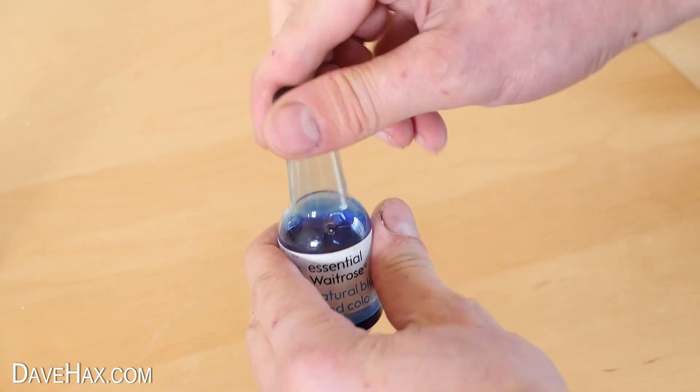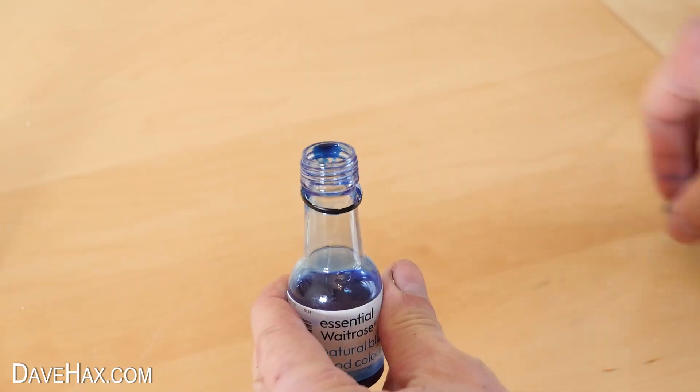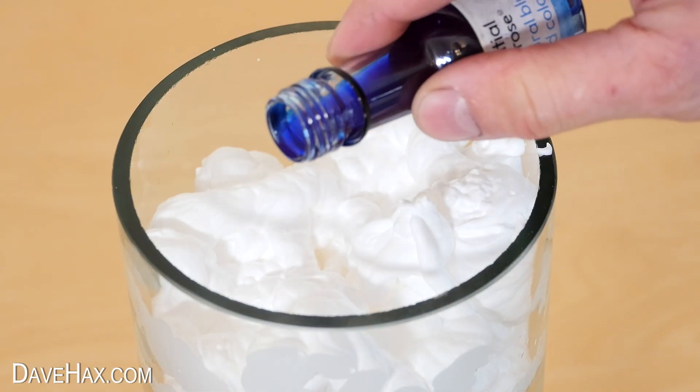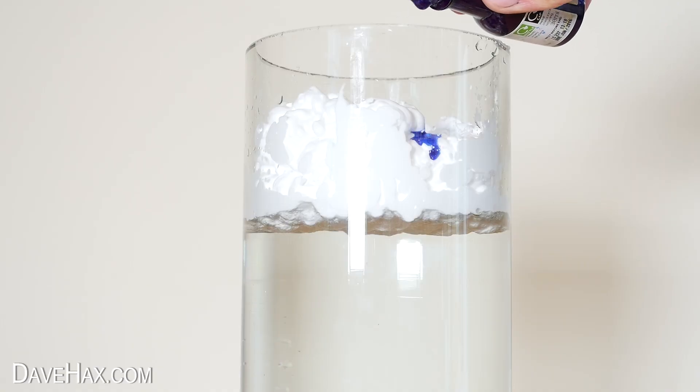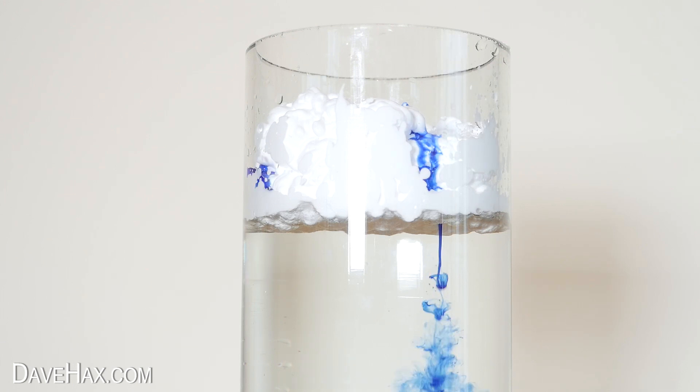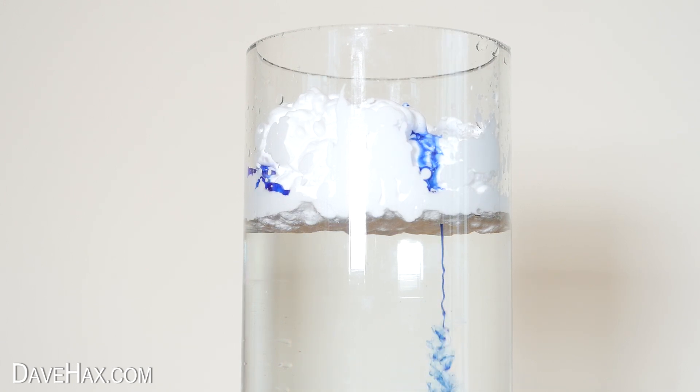Next, take some food coloring. Dribble a bit over the shaving foam like this and watch what happens. The coloring slowly works its way down through the foam and punctures a hole through it.